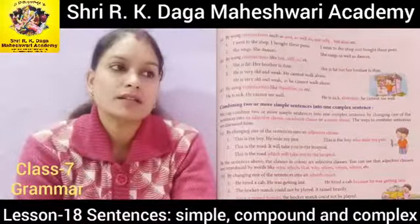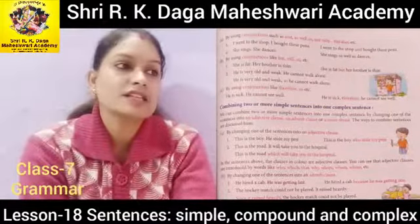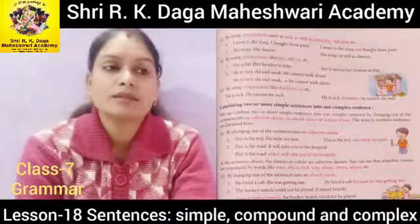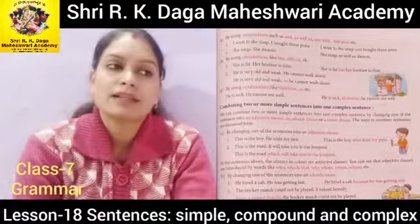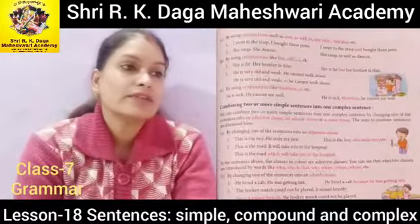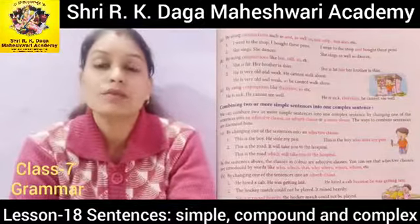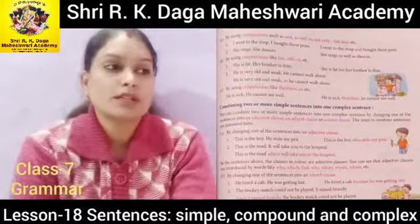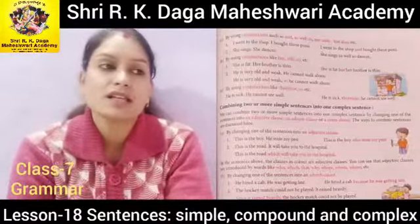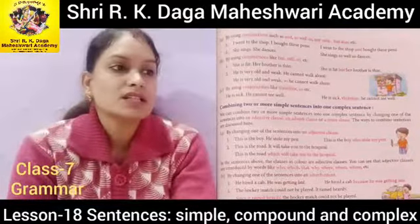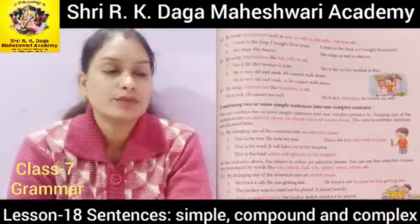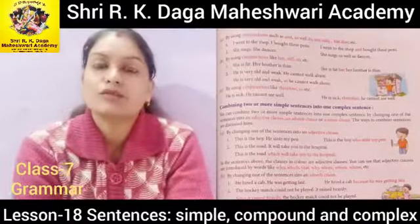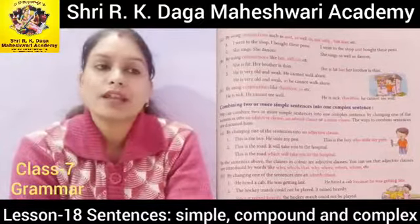By using conjunctions like 'but' and 'so': 'She is fat. Her brother is thin.' Combined: 'She is fat but her brother is thin.' Another example: 'He is very old and weak. He cannot walk alone.' Combined: 'He is very old and weak, so he cannot walk alone.' Also: 'He is sick and he cannot see well.'